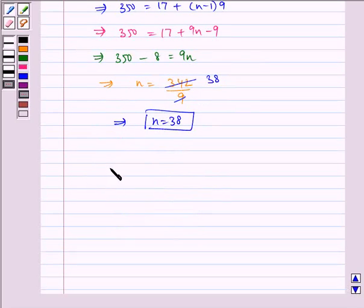Now, sum of N terms is given by S is equal to N by 2 multiplied by A plus L. So, which is equal to, N is equal to 38.